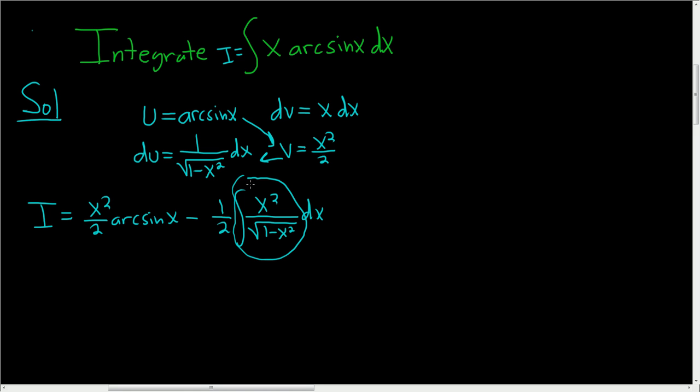So the way to do that is to make a trig substitution. We're going to set x equal to sine theta, and so dx will be equal to cosine theta d theta. And that means that the square root of 1 minus x squared will be the square root of 1 minus sine squared, which is the square root of cosine squared, which is simply cosine.